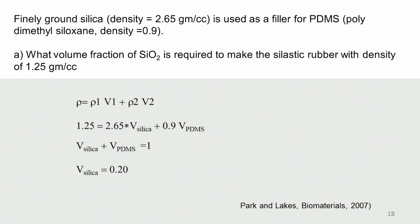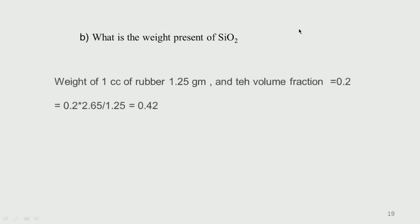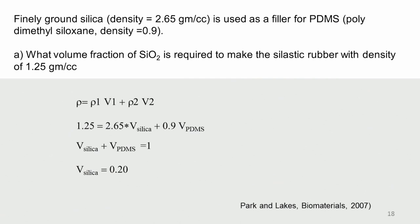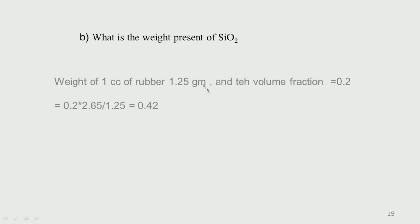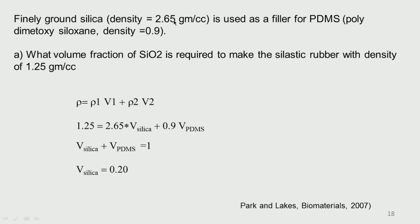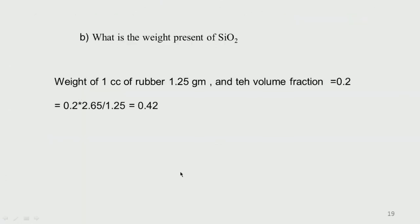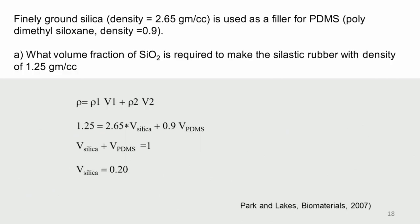What is the weight percent of silica? Weight of 1 cc of rubber is 1.25 g, volume fraction is 0.2. Weight percent of silica = (0.2 × 2.65) ÷ 1.25 = 0.42, or 42% by weight. So I need to add 42% by weight but only 20% by volume — the weight fraction is higher because the density of silica is very high.